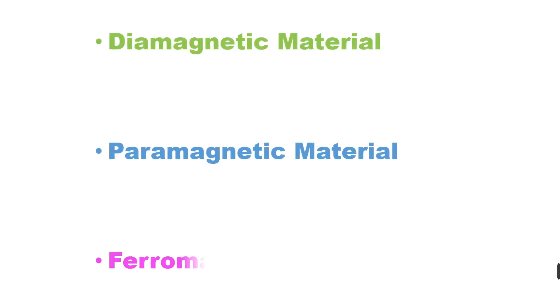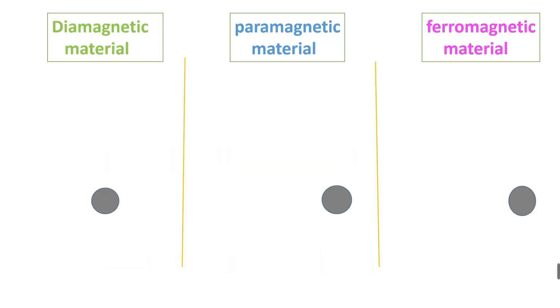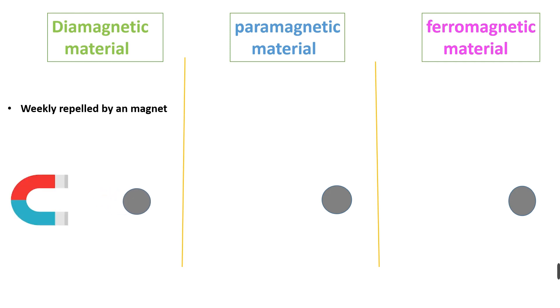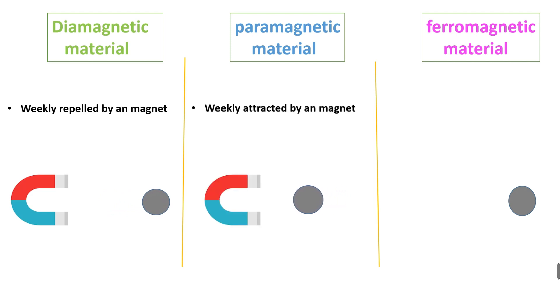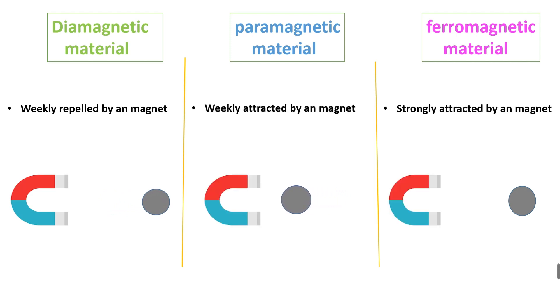Let's come to our main topic which is magnetic material. In this video we are going to discuss about three magnetic materials: diamagnetic material, paramagnetic material, and ferromagnetic material. Diamagnetic materials are weakly repelled by a magnet, while paramagnetic materials are weakly attracted by a magnet, and ferromagnetic materials are strongly attracted by a magnet.